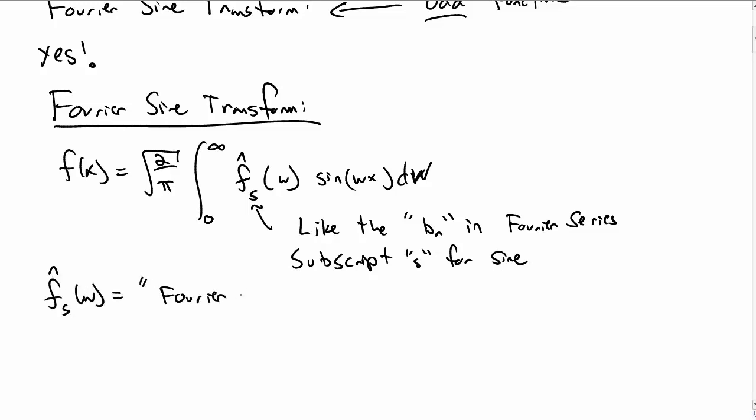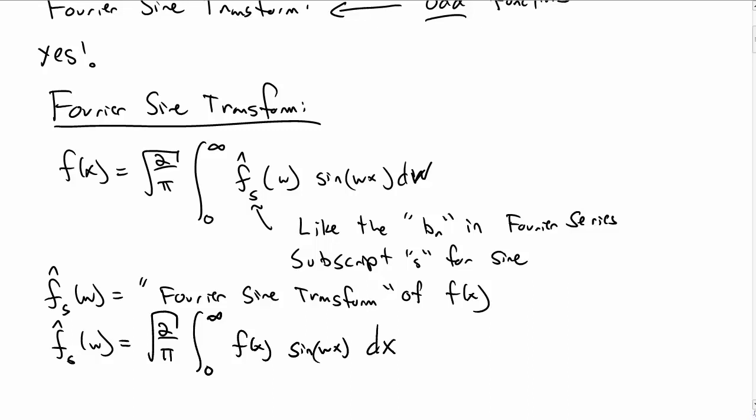And just as with the Fourier cosine transform, we call f hat s the Fourier sine transform of our function f of x. We can compute this by a formula that looks very similar, the square root of 2 over pi, integral from 0 to infinity, f of x, sine of w x, dx.